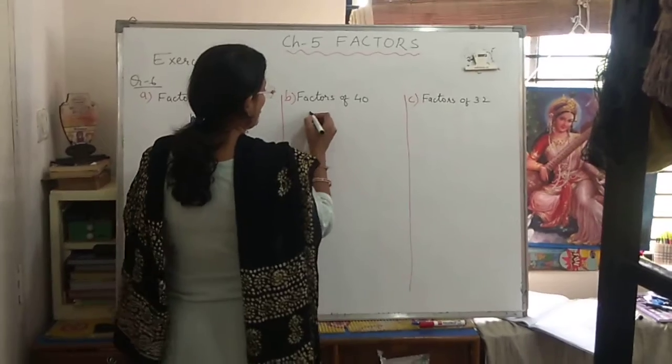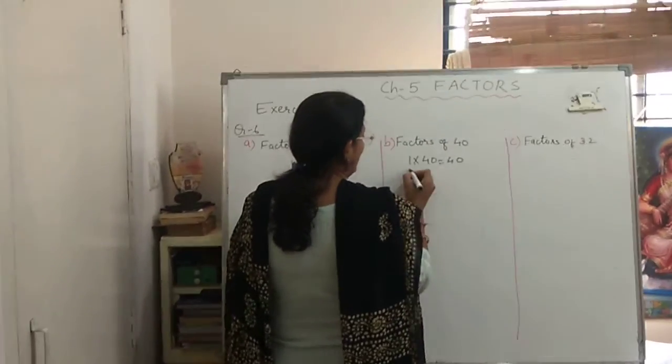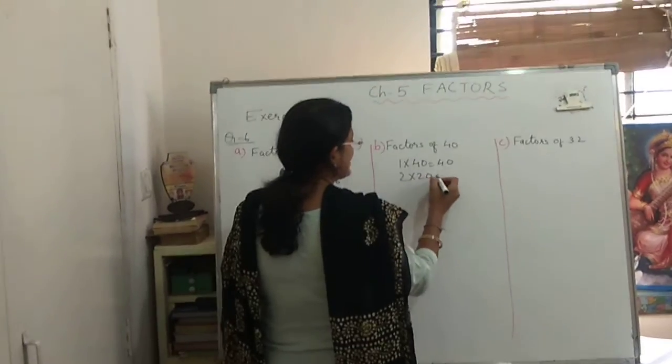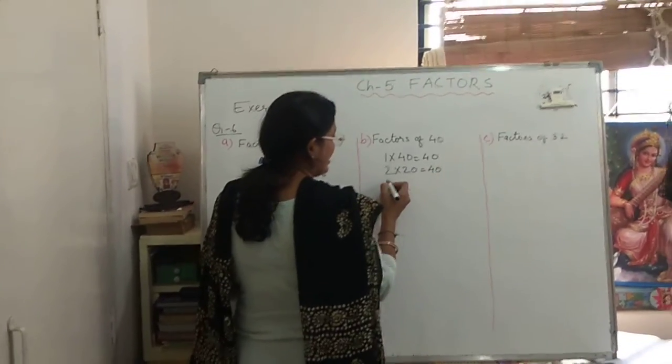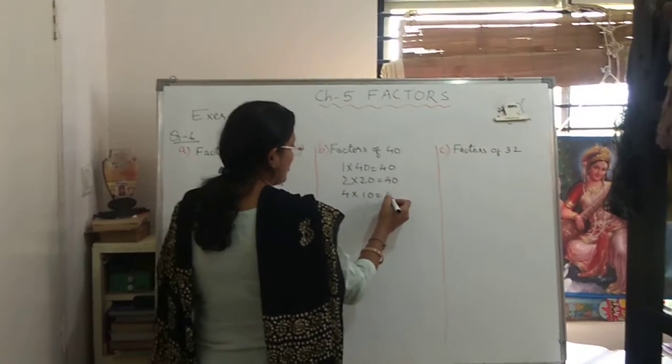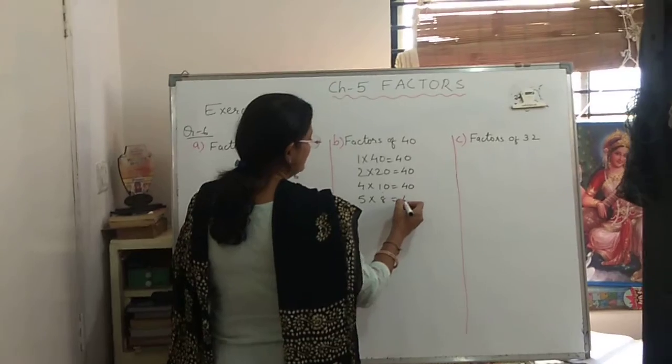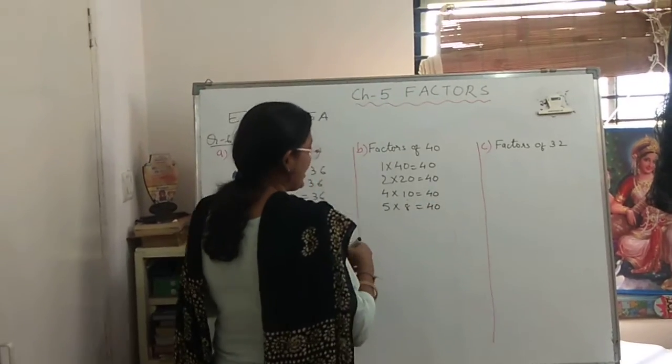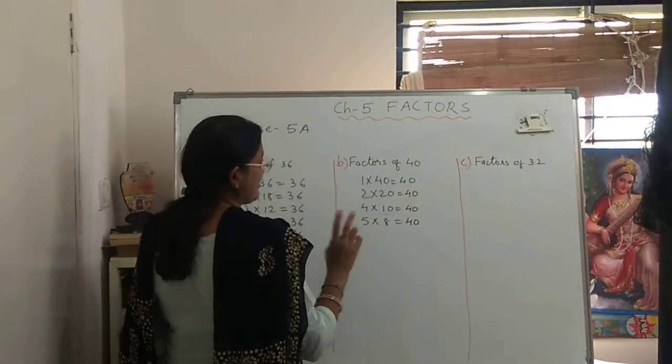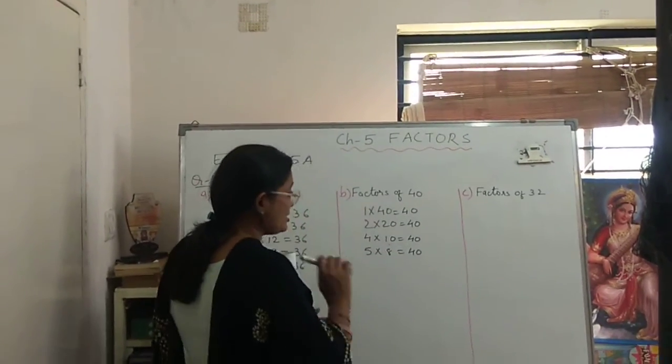So what we will do? 1 times 40 are 40, 2 times 20 are 40. In 3 table it does not come. So 4 times 10 are 40. Then 5 times 8 are 40. In 6 table, 40 does not come. 7 table also it does not come. And 8 table already it is there.